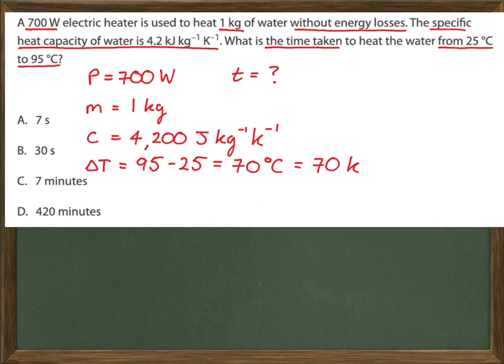So I want to calculate the time. What do I know about what's actually happening here? I have an immersion heater, 700 watts, and that's being used to heat a sample of water. So energy is being transferred, Q, from the heater to the water with no loss of energy to the environment. That's why I said it makes it simpler.